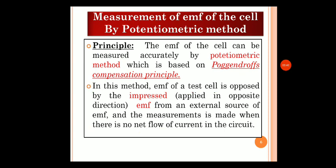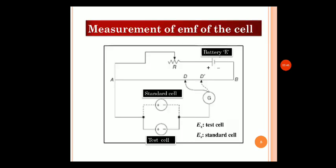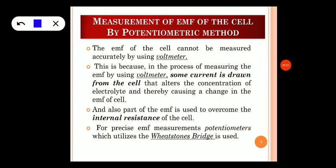Before going to the procedure, it is important to note that we do not use a voltmeter to measure EMF. There are two disadvantages of using a voltmeter: first, some current is drawn by the cell; second, some EMF is used to overcome the internal resistance of the cell. These two factors alter the concentration of the electrolytes, thereby causing a change in the EMF of the cell. Therefore, instead of a voltmeter, we use a potentiometer to measure the EMF.